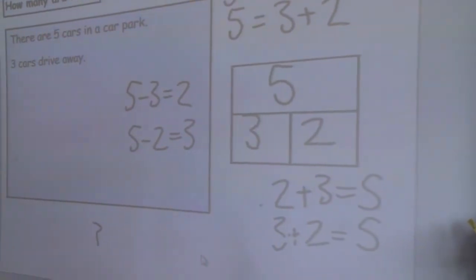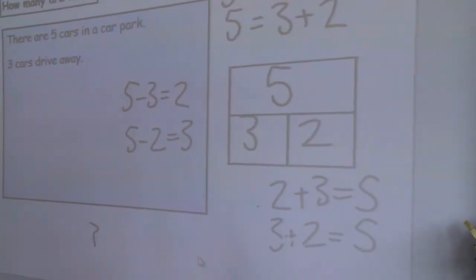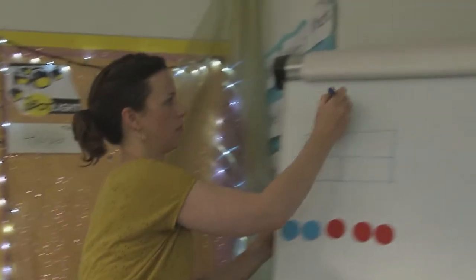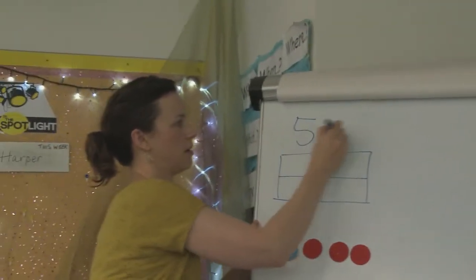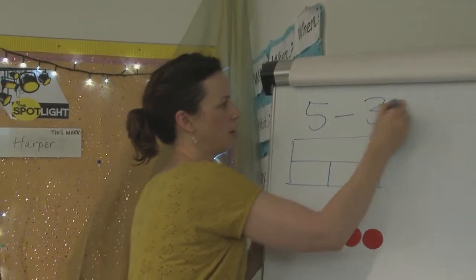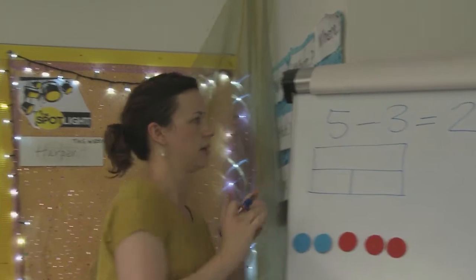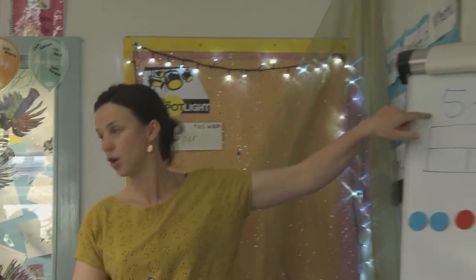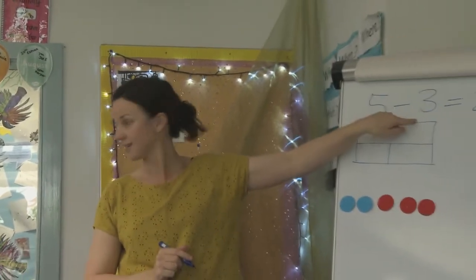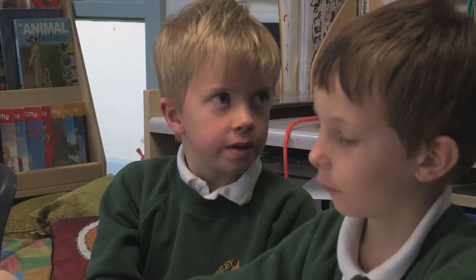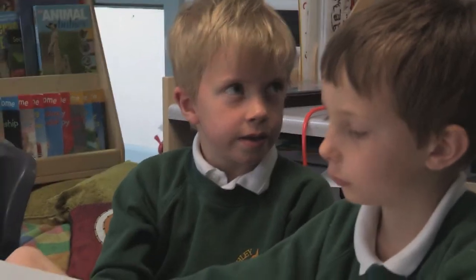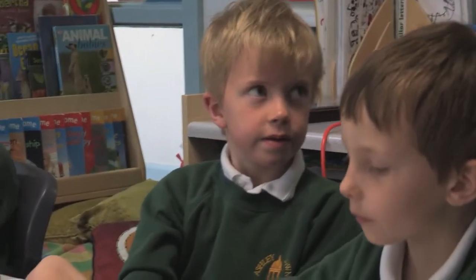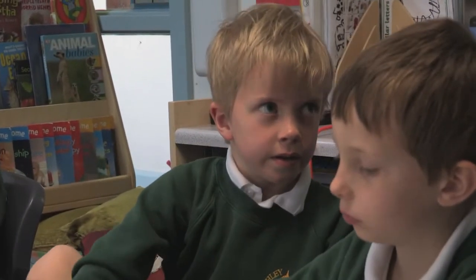Oscar? Five minus three equals two. Good. Because our whole is five, we subtracted three, and then we have two left. So they're all correct, but that tells our story best.